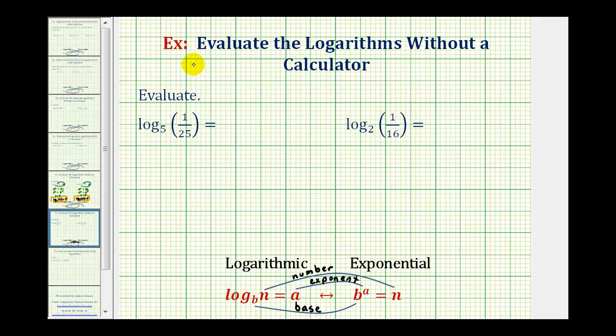To evaluate this, we'll set it equal to a variable, let's say x. Write this as an exponential equation and then solve for x. To write a log equation as an exponential equation, we need to remember the placement of the base, exponent, and number. B is the base, a is the exponent, and n is the number. A nice way to remember this conversion is to start with the base and then work around the equal sign to form the exponential equation.